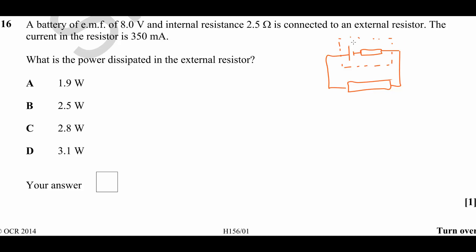We know that the EMF of the battery is 8 volts and the internal resistance is 2.5 ohms. The current flowing through the circuit is 350 milliamps.